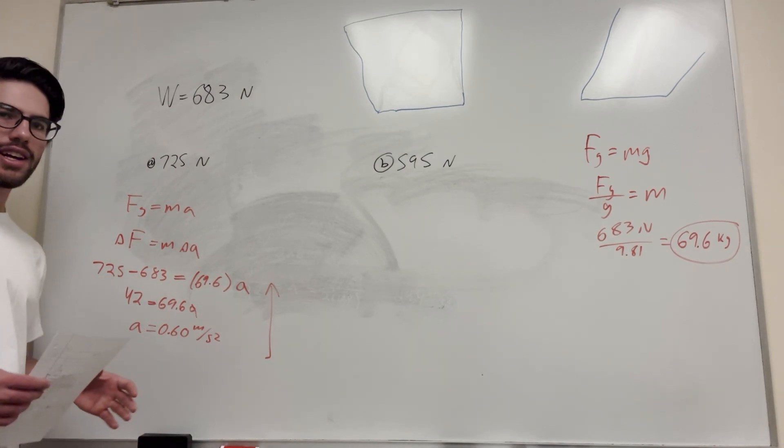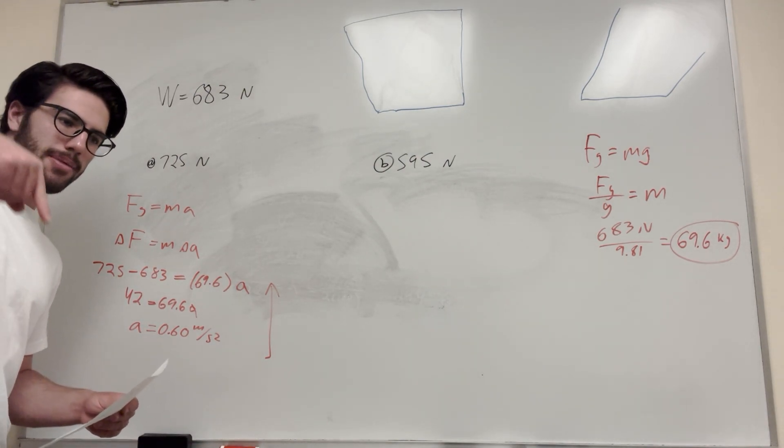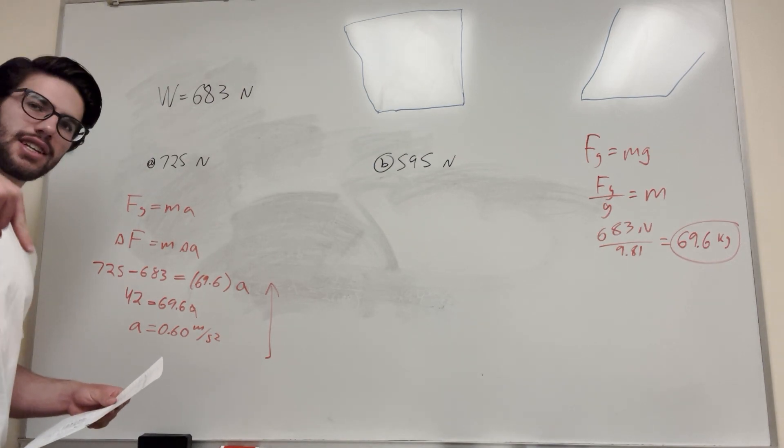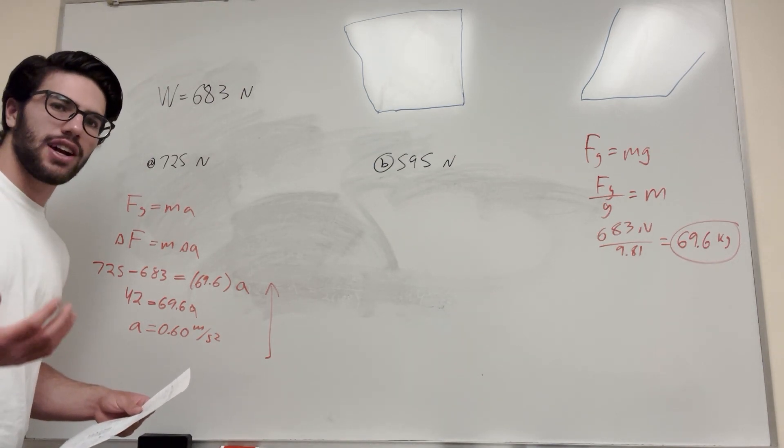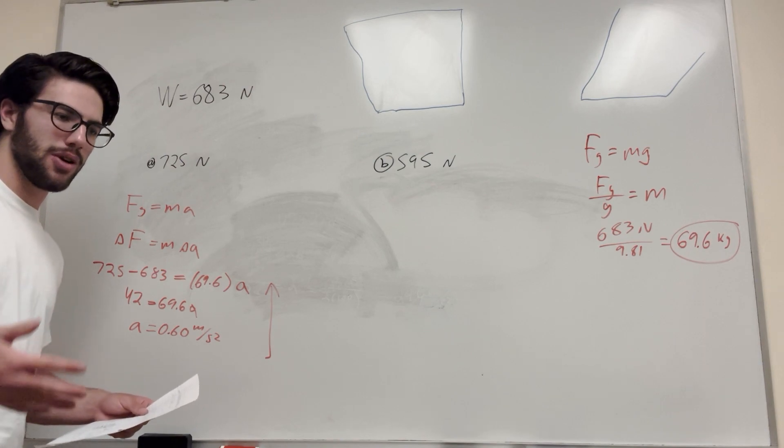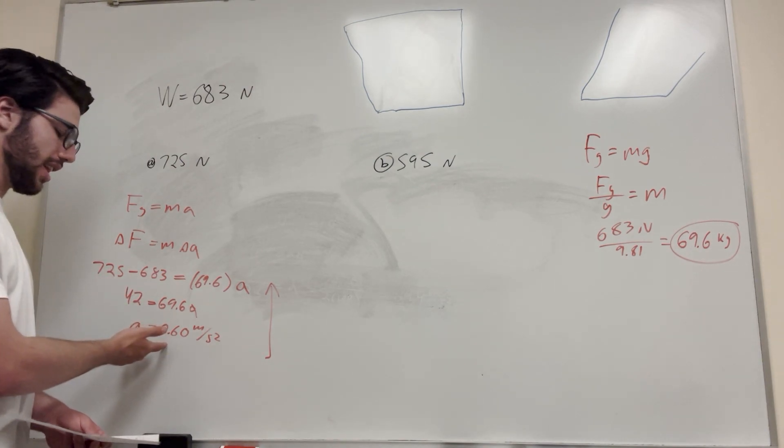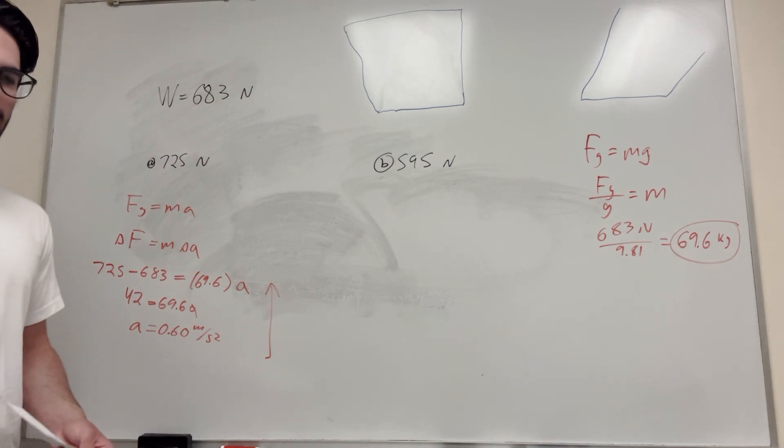Basically, this acceleration says that due to gravity, it's negative 9.81 downward. But in this case, the elevator is not only contradicting that negative 9.81, but going up at 0.68. So that's how that works.